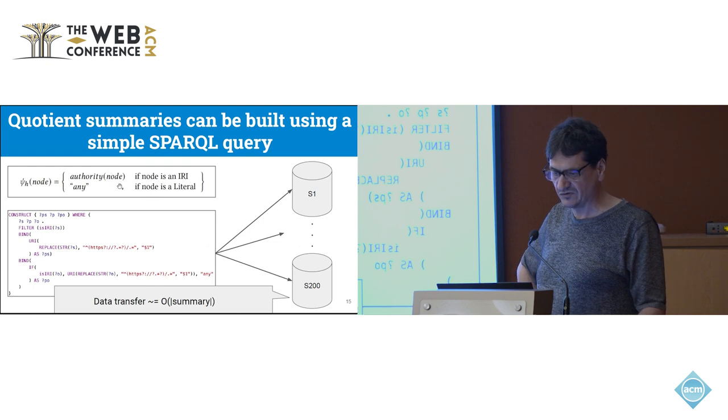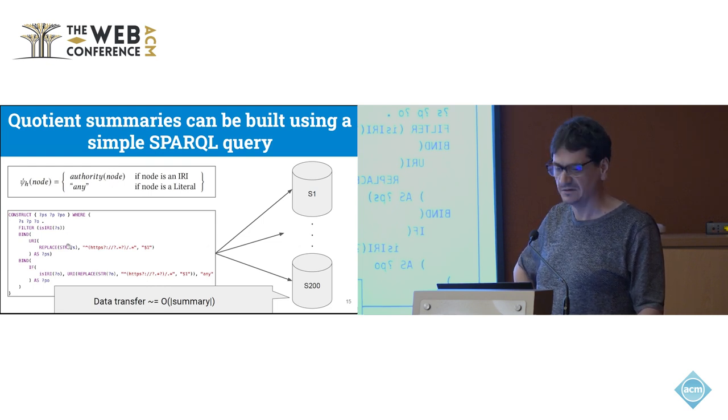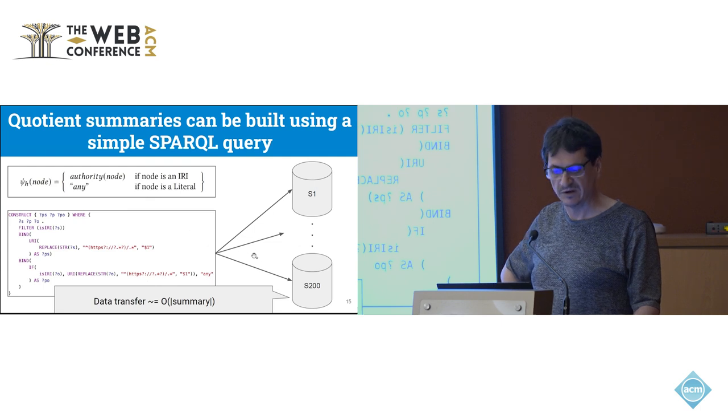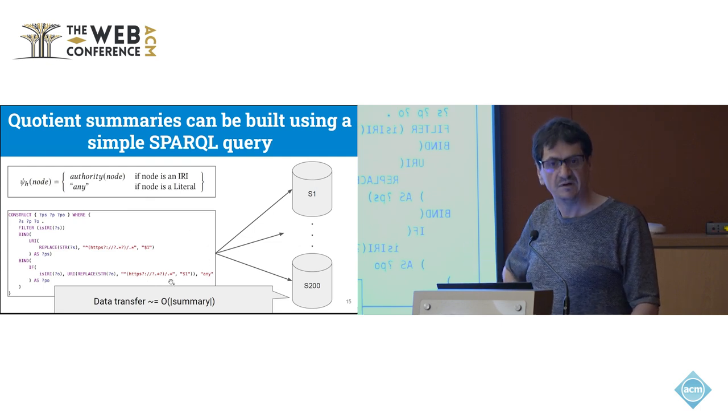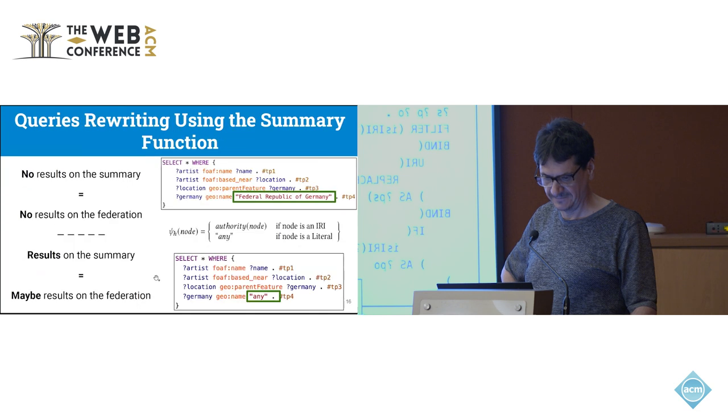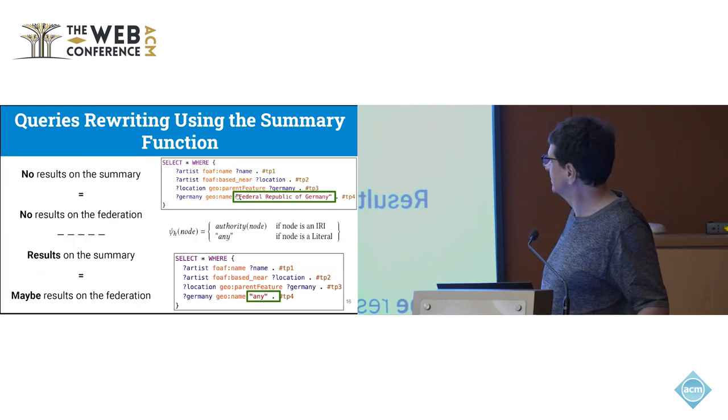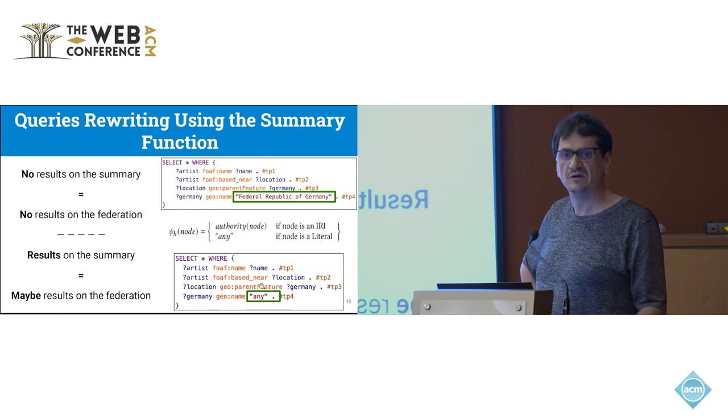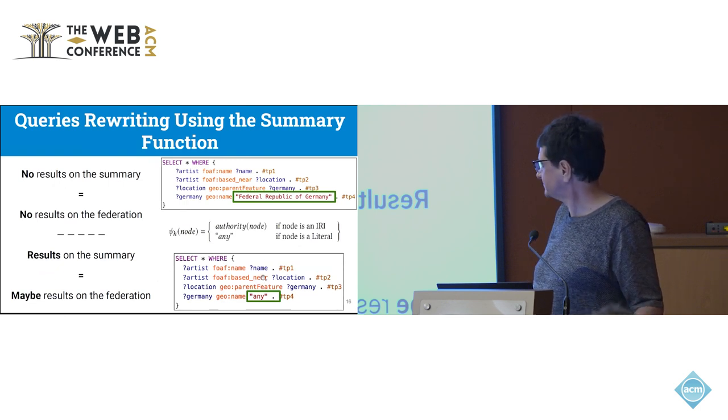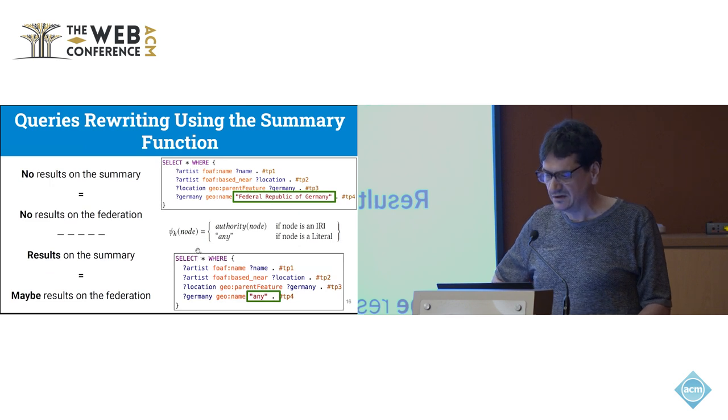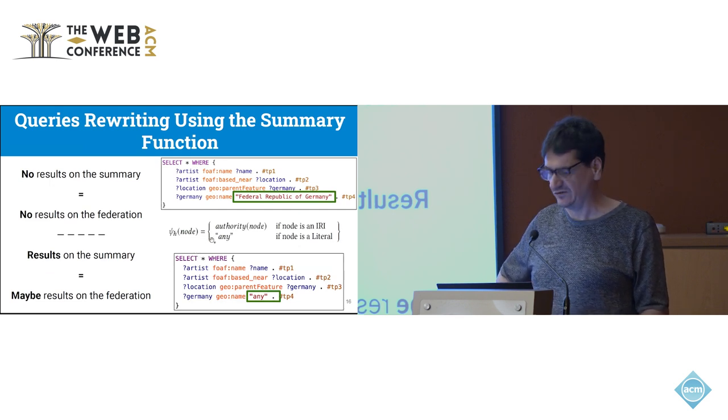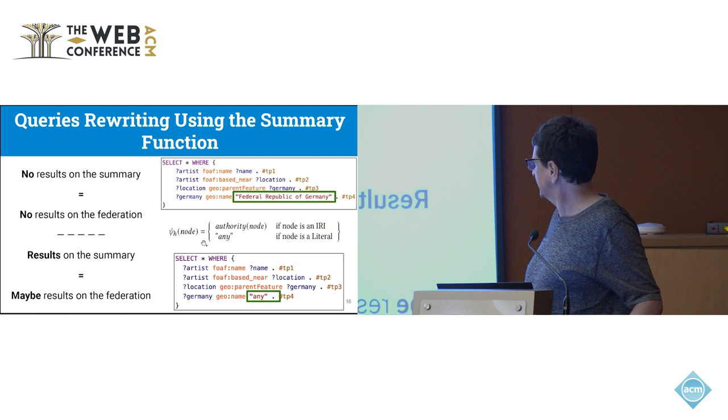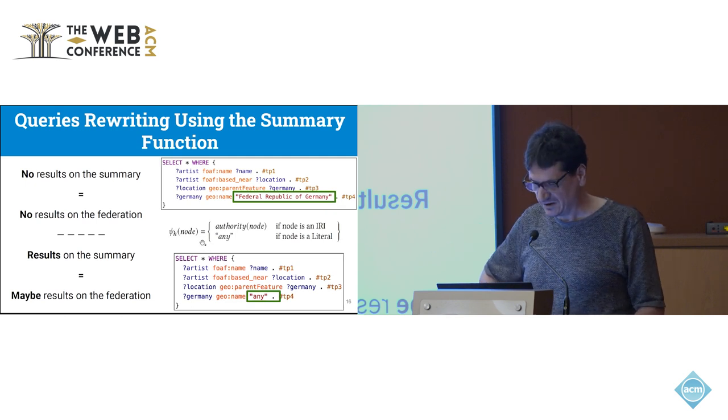How do you really collect this summary on real data? This summary function can be expressed as a simple construct query. So you just send this query to all endpoints and grab and merge the result. Now we have to be careful because if we want to execute the original query, I have to also apply the summary function on the query itself to make it executable on the summary. And I have a nice property of quotient summary: if there is no result on the summary, there is no result on the federation. If you have a result on the summary, maybe you have a result on the federation.